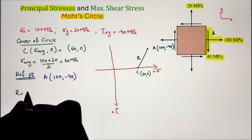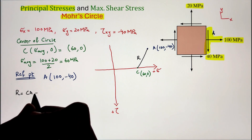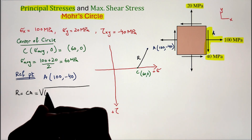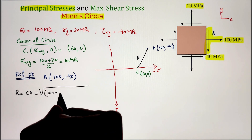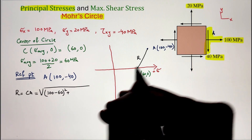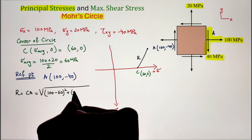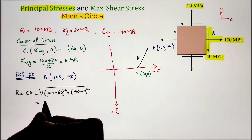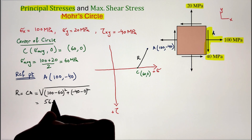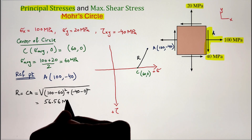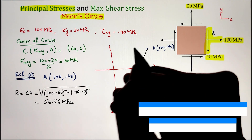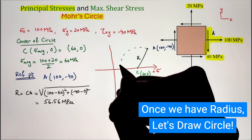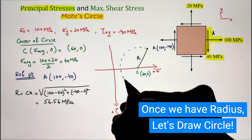Joining point C to point A, this distance gives us the radius of the circle. We can utilize the distance formula to calculate the radius — that is the sigma coordinate of A minus the sigma coordinate of point C, squared, plus the tau coordinate of A minus the tau coordinate of point C, squared, and taking the square root of the whole. This gives us our radius value of 56.56 megapascal.